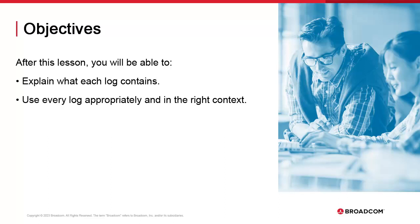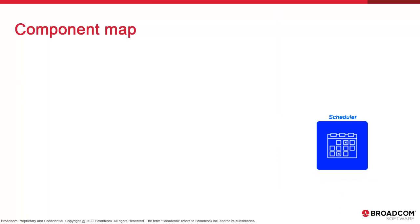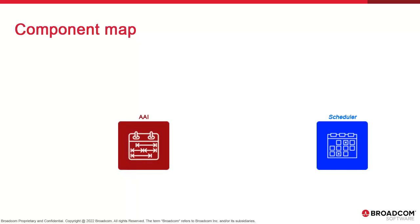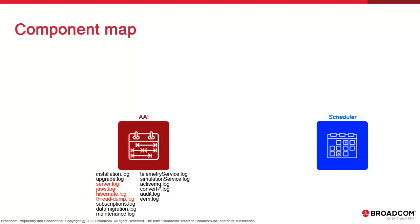In this first video, we focus exclusively on AI. Let's start with a simplified model of the AI architecture and its components, so we understand where the logs can be found. We start with the AI server, which has the largest number of logs. The big three are Server.log for the startup procedure, JAWS.log for system-wide AI operations, and Hibernate.log.